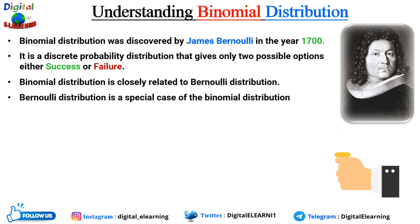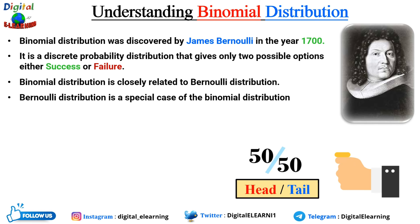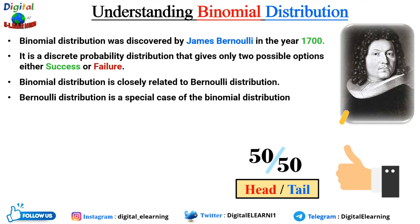For example, flipping a coin is considered a Bernoulli trial. Each trial can only have two values — either head or tail — both with 50 percent probability of occurrence. Each success has the same probability: probability of flipping a head is 0.5, and tail is also 0.5. The result of one trial does not influence another. Bernoulli distribution is a special case of binomial distribution where the number of trials n equals 1.